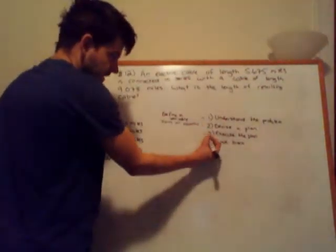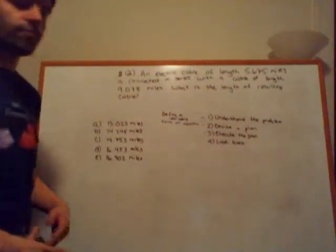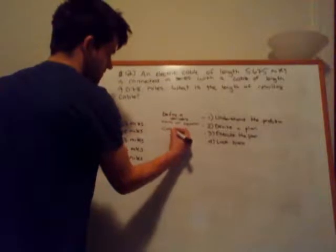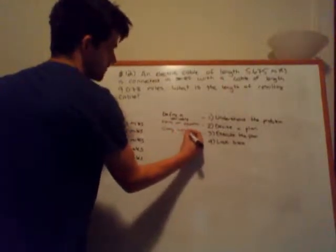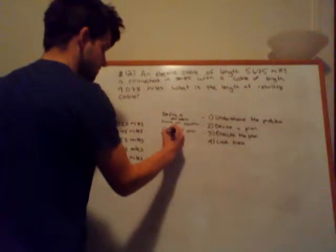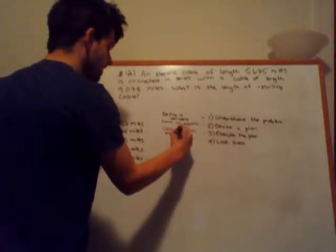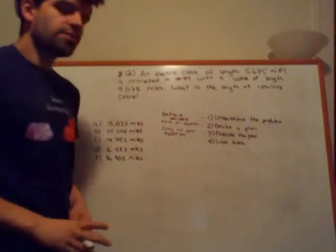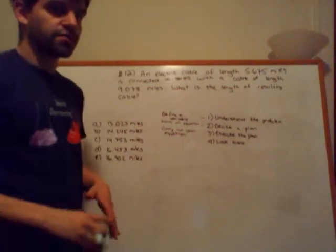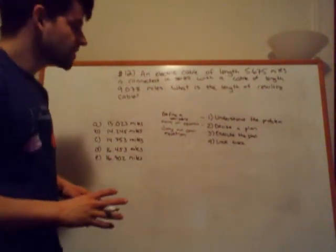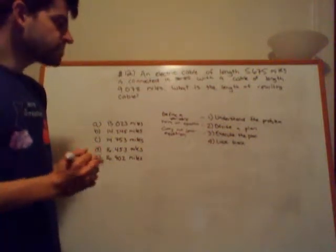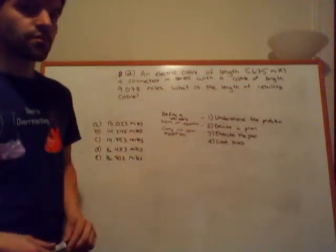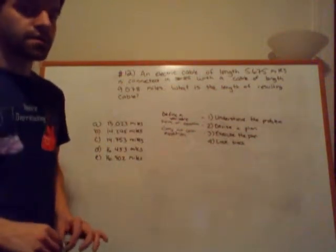Step number three is to execute the plan, which means to carry out your equation or solve for your variable. Then step number four is to look back. Looking back is one of the most beneficial things that you can do when it comes to mathematics. The reason for that is, it allows you to question whether or not your solution or solutions make logical sense.